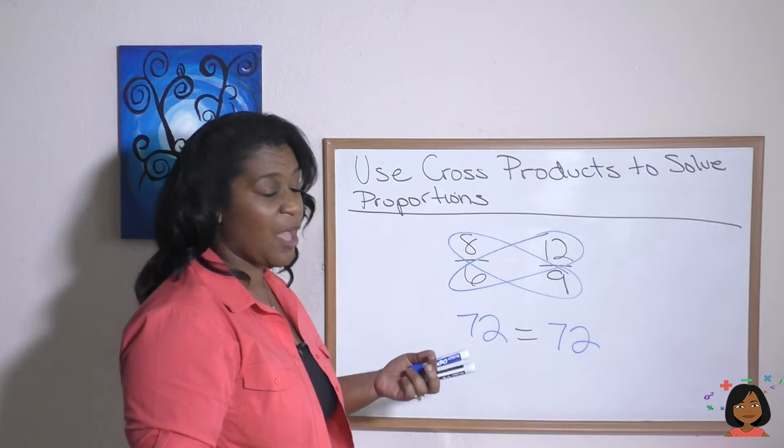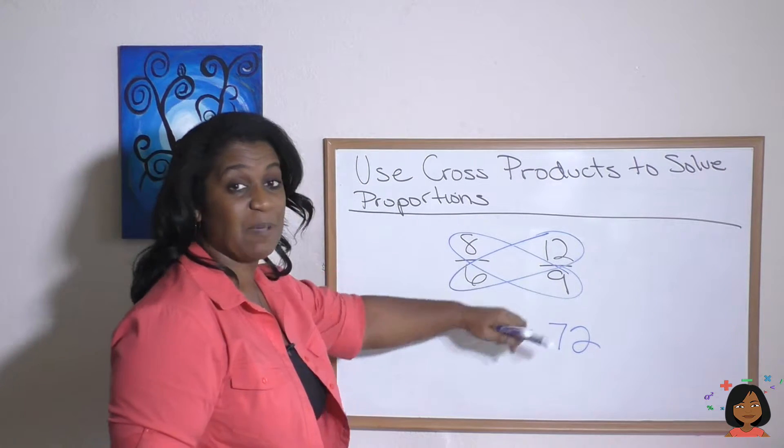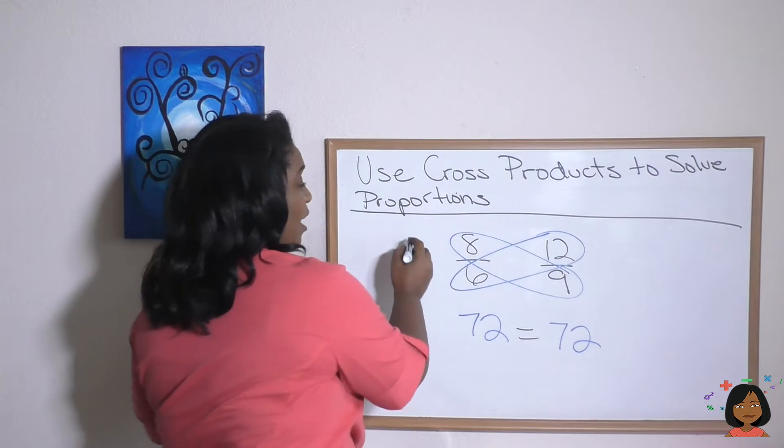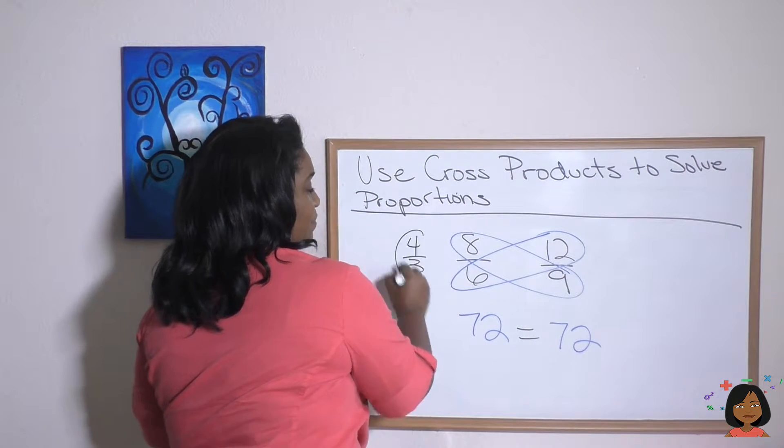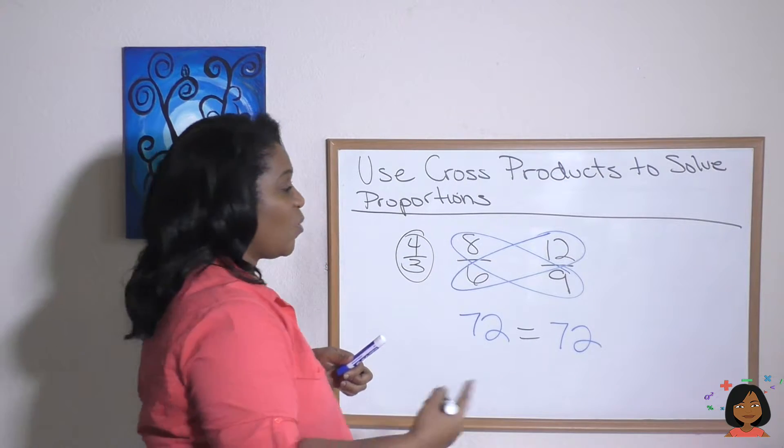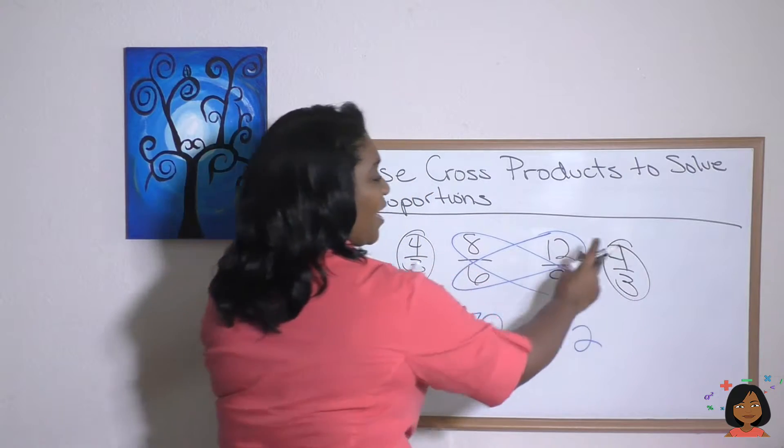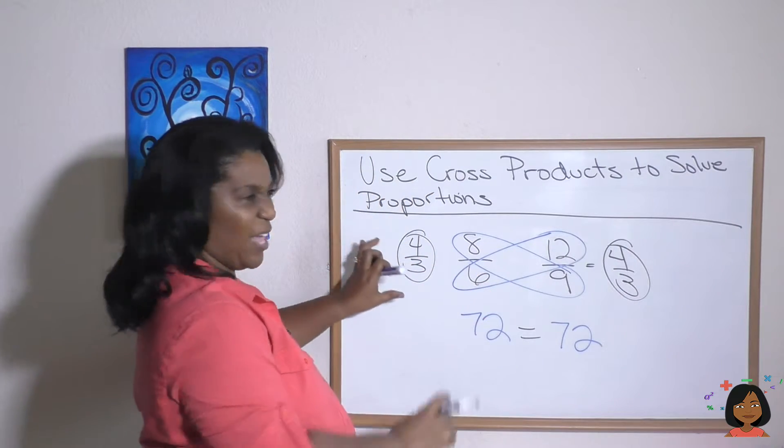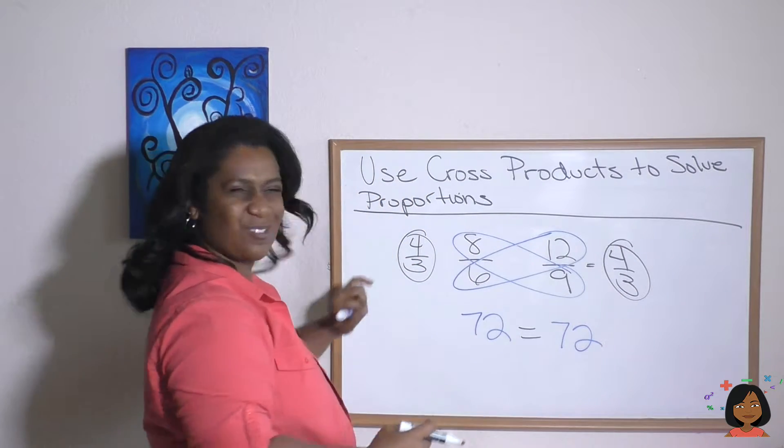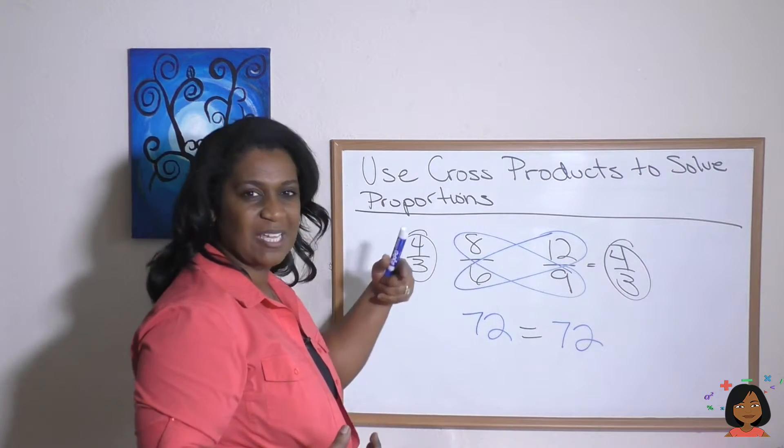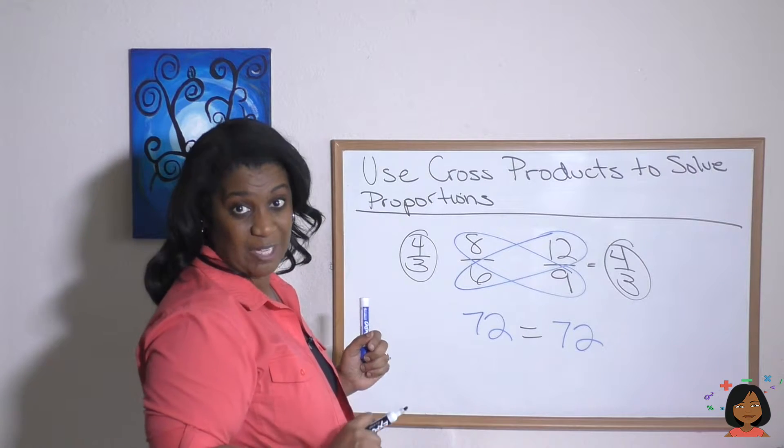And how we know that is, if we tried to simplify both of these proportions, we could see that 8/6 would simplify down to 4/3, and 12/9 would also simplify down to 4/3. So they are equal proportions because of that root ratio is four over three. But the proportion or the cross product gives us an easy way to figure out that they are equal.